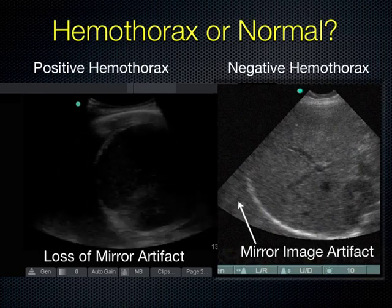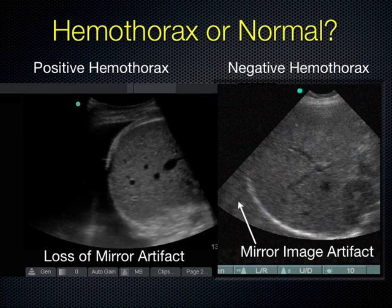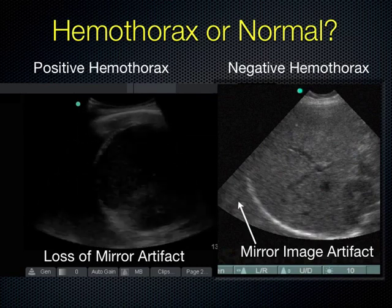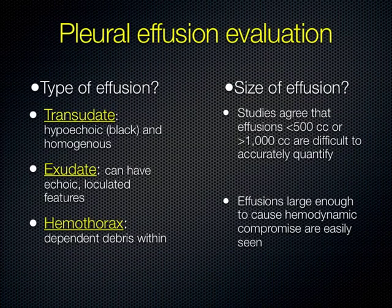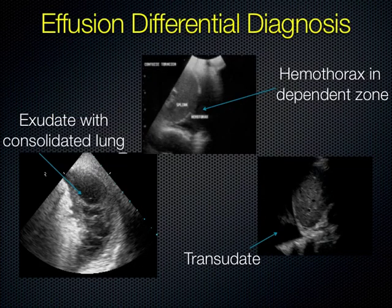Ultrasound can help guide effusion management. While you should never say transudate versus exudate based on ultrasound alone — you need lab confirmation — you can tell whether to use a thin needle for thoracentesis or a chest tube. If the effusion looks very thick with fibrinous loculations or blood, you need to manage it differently. On the transudate image, notice the spine shadow visible behind the fluid — the spine sign.